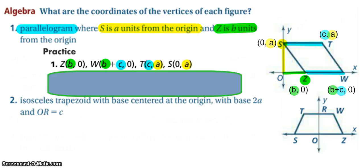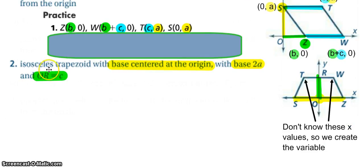Try number two if you have yet to do so. So we see for number two that it's an isosceles trapezoid, so we know about the distances and the angles and things being parallel. So it's centered at the origin with a base of 2A, so I know that S and Z are both going to be A away from the origin with a Y value of zero.